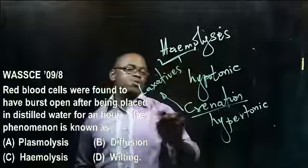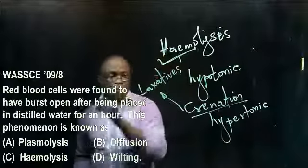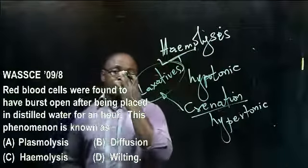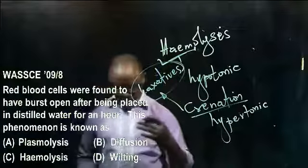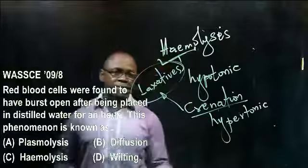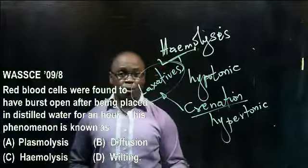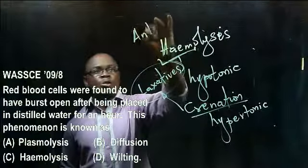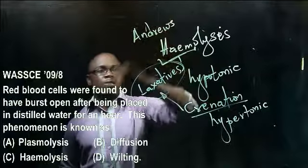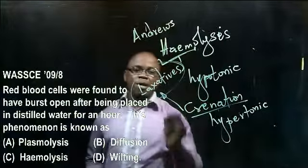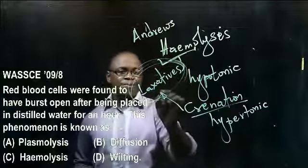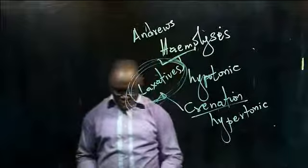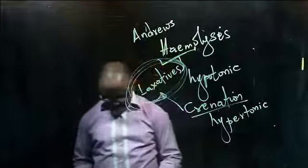In humans, the excessive use of a group of drugs called laxatives is known to be a major cause of crenation. Laxatives are artificial drugs that can chemically aid digestion. For example, the solution of magnesium sulfate, commonly called Andrews, is a common laxative, and excessive intake of laxatives can result in crenation — the shrinkage of the red blood cells.